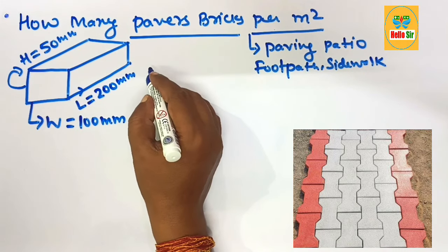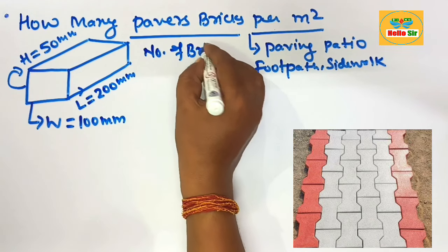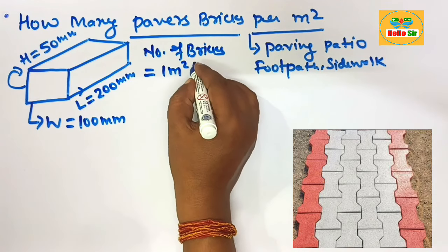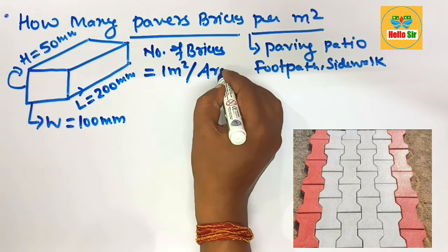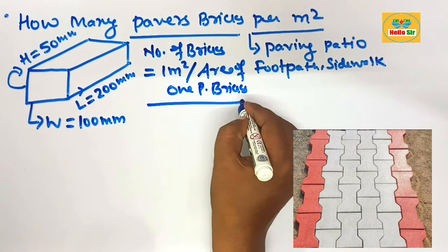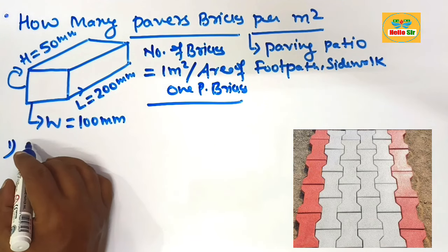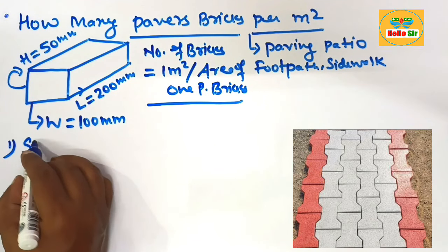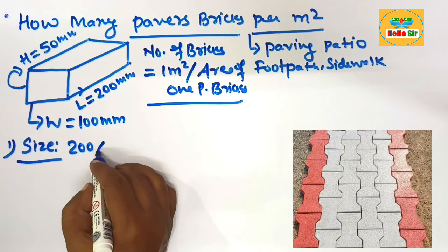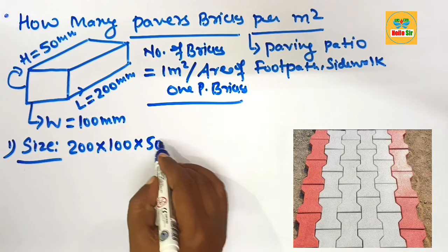Now, how do we calculate the number of paving bricks per square meter? The formula is: take the area of one square meter and divide it by the area of one paving brick. The size considered here is 200 mm in length by 100 mm in width by 50 mm in height.